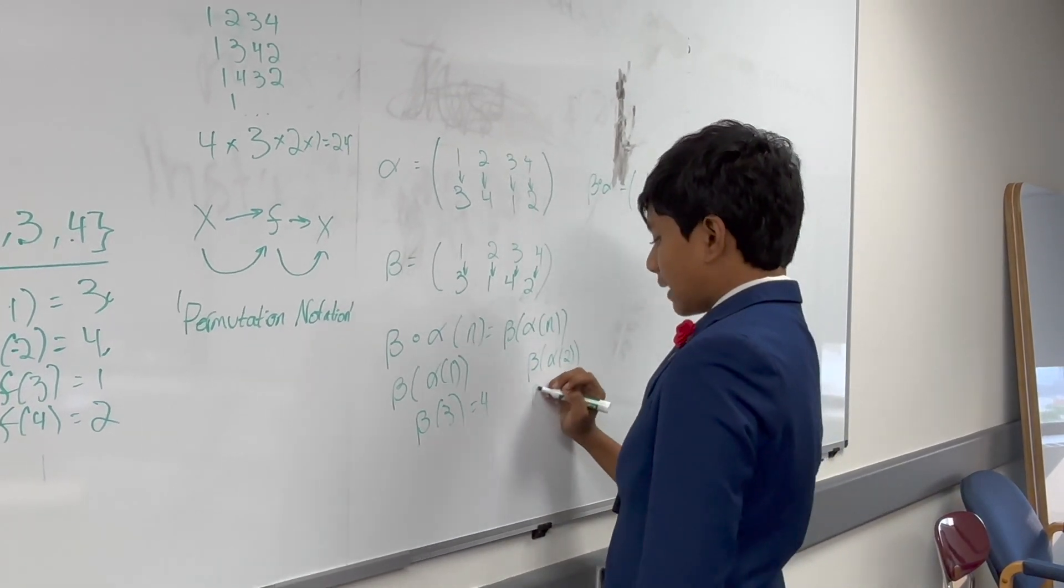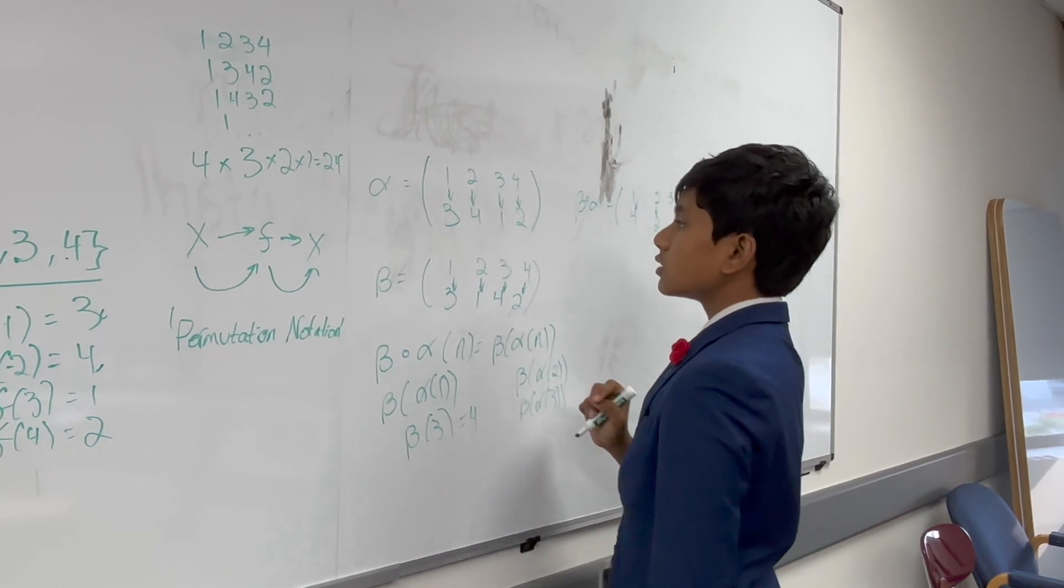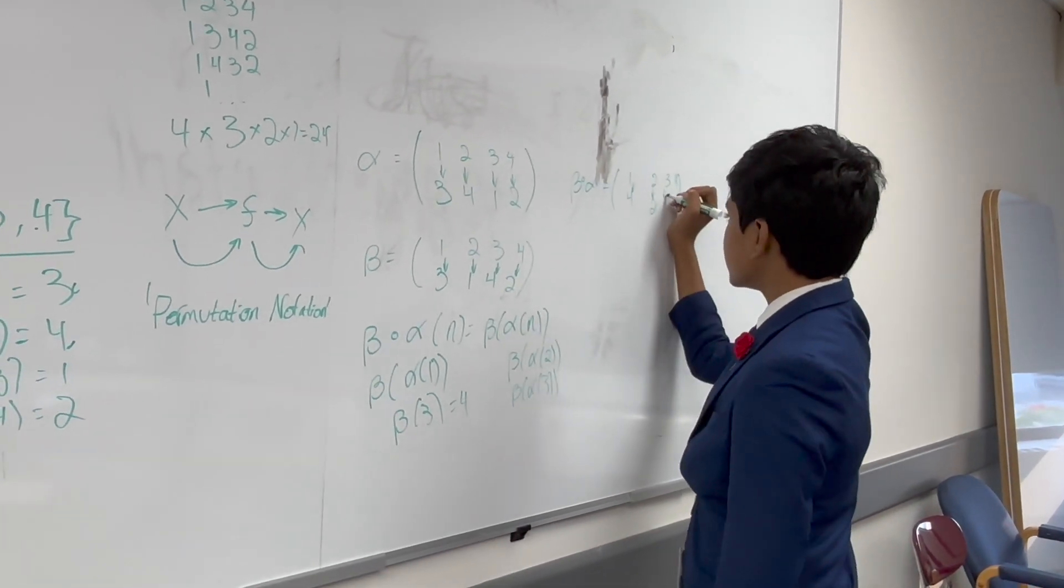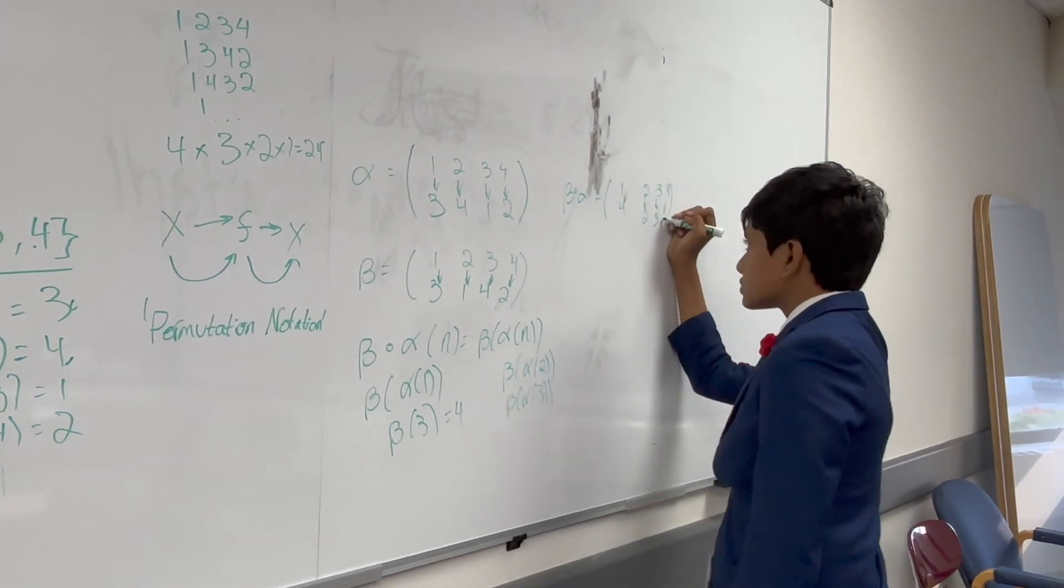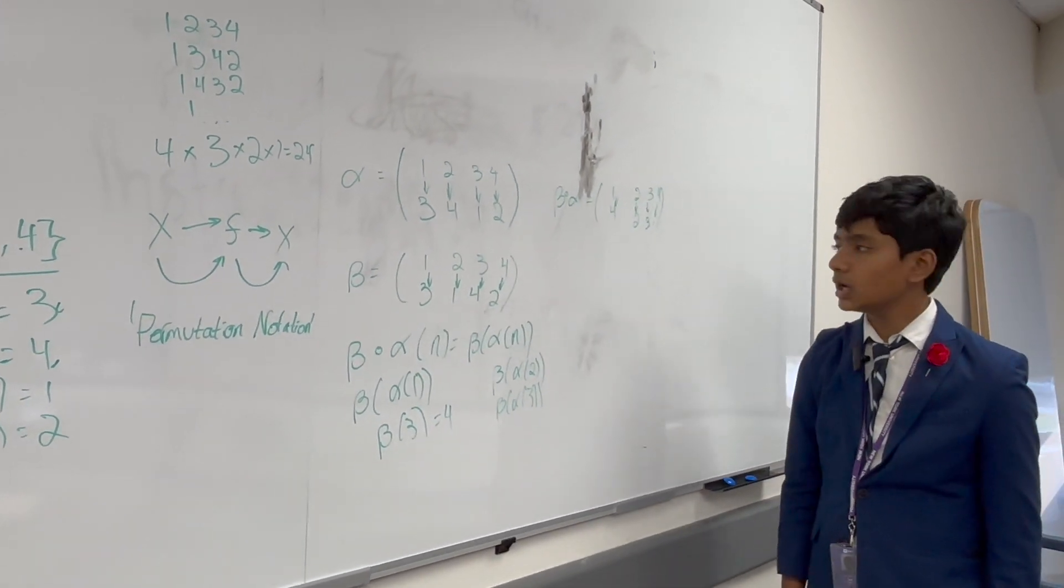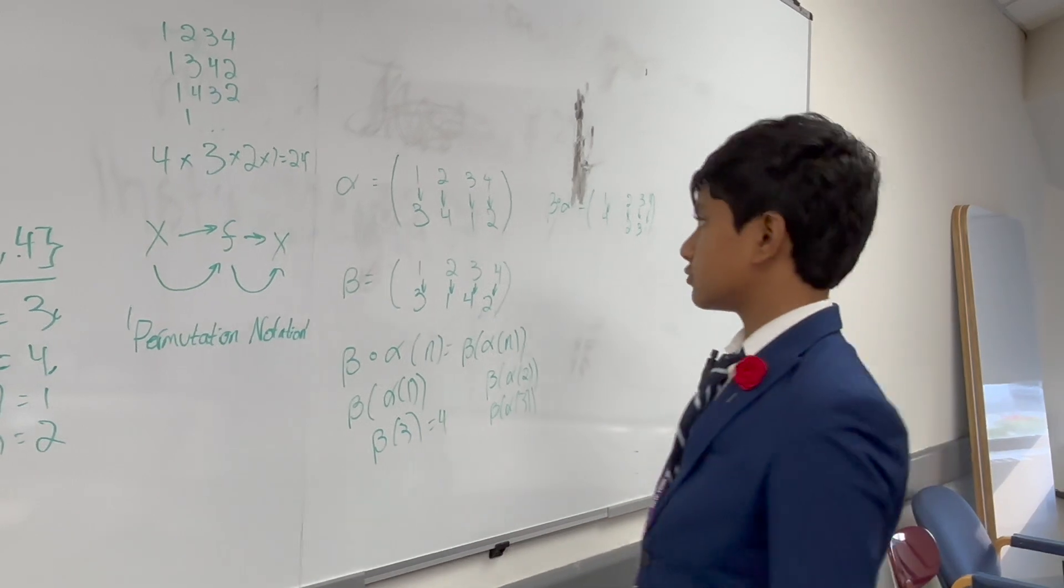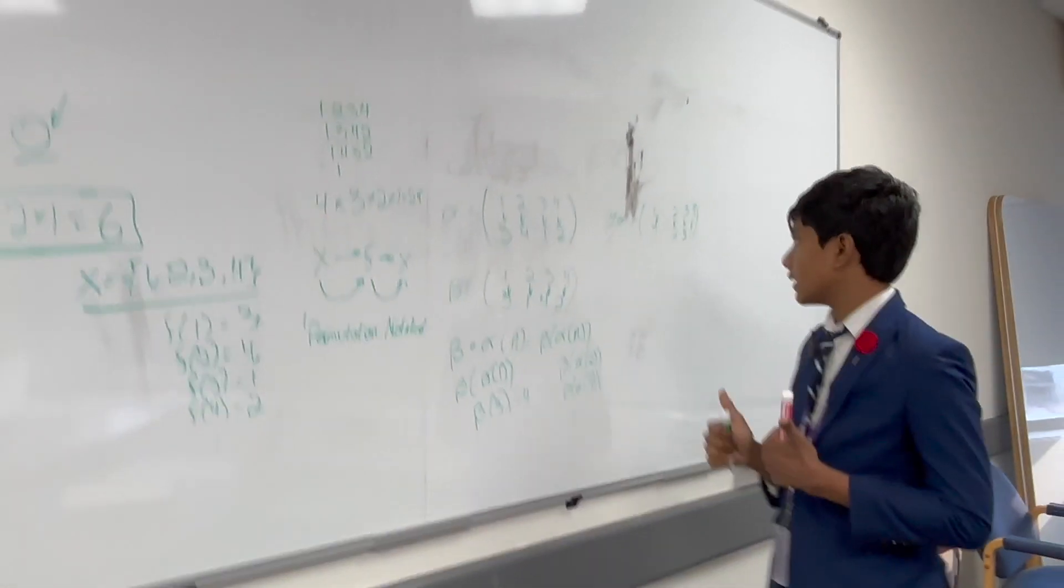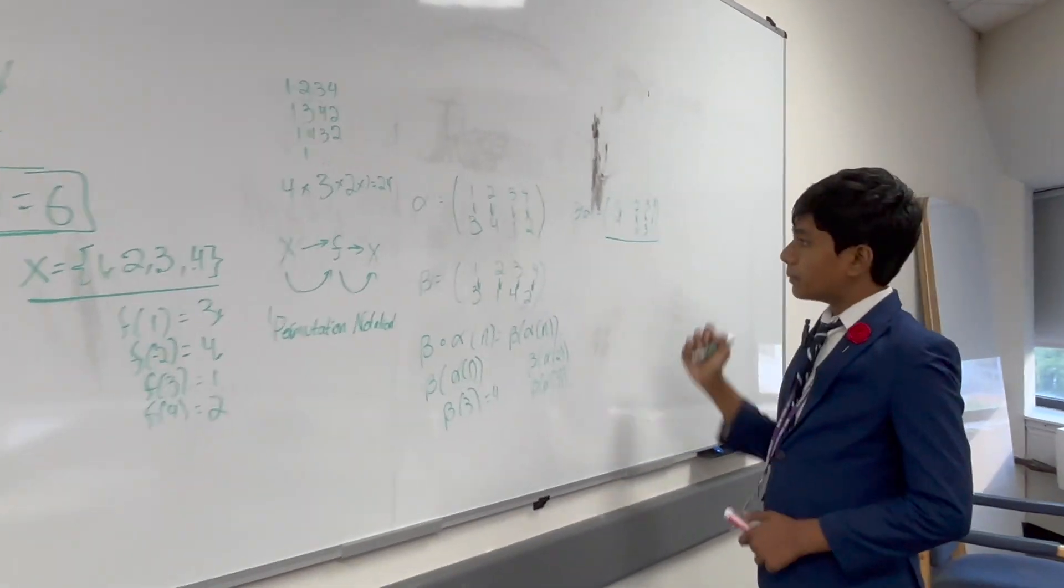And then, what about beta of alpha of 3? Well, 3 maps to 1, 1 maps back to 3. It means this is the identity. And, of course, there's nothing left for this to map to, but 1. And, of course, we can verify that. 4 maps to 2, 2 maps to 1. Great. So, this is how you compose.